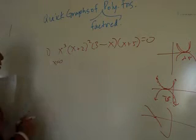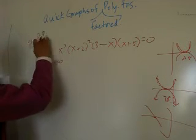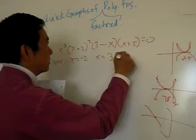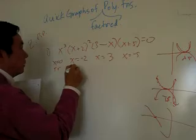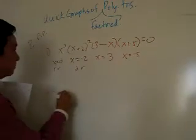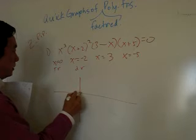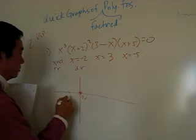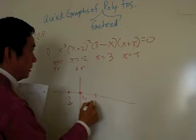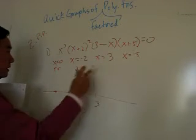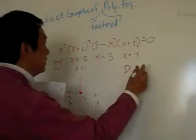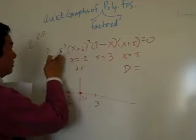Using the zero product property, set each factor equal to zero and solve: x equals 0 (triple root), x equals negative 2 (double root), x equals 3 (single root), x equals negative 5 (single root). So the graph has a triple root at zero, a double root at negative 2, a single root at 3, and a single root at negative 5.